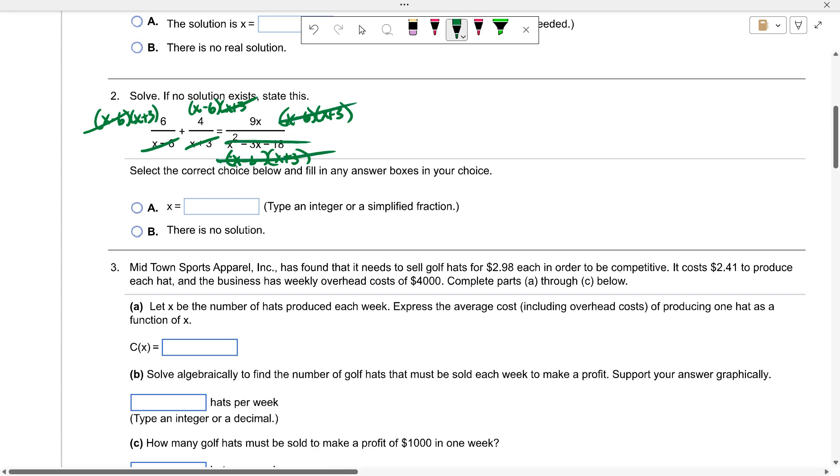What I'm left with is 6 times x plus three plus 4 times x minus six equals 9x. Once I get there, it's fairly simple algebra. Do the distributive property: 6x plus 18 plus 4x minus 24 equals 9x. So 10x minus 6 equals 9x. If I subtract 10x from each side, negative 6 equals negative x, so x equals 6.